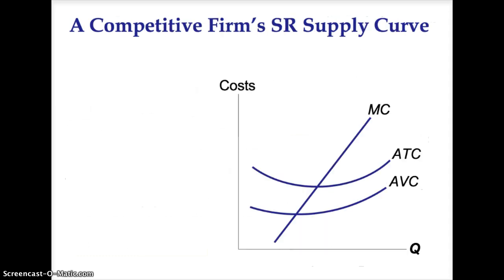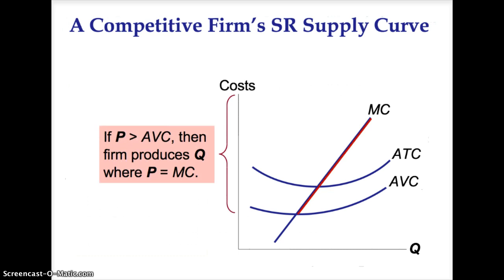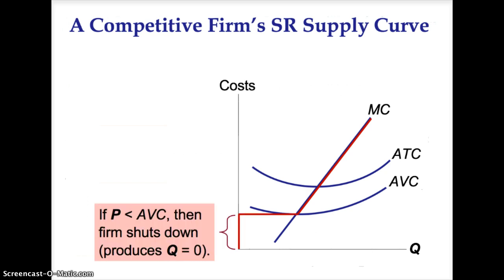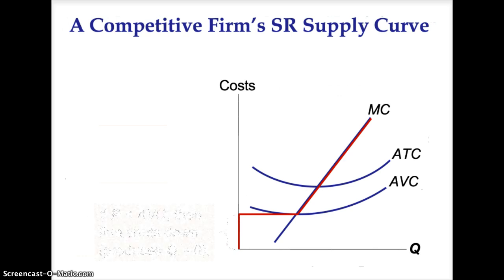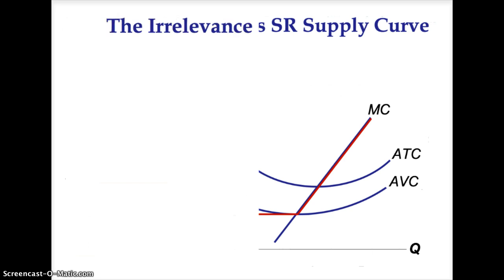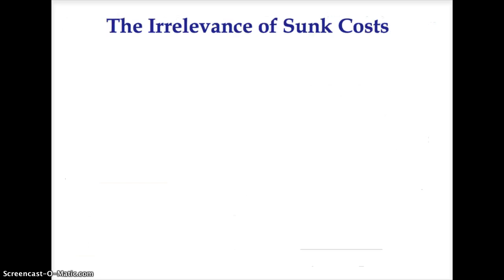The firm's short-run supply curve is the portion of the marginal cost curve above the average variable cost curve. If price is greater than average variable cost, then the firm produces a quantity where price equals marginal cost. If price is less than average variable cost, then the firm shuts down and produces zero quantity.